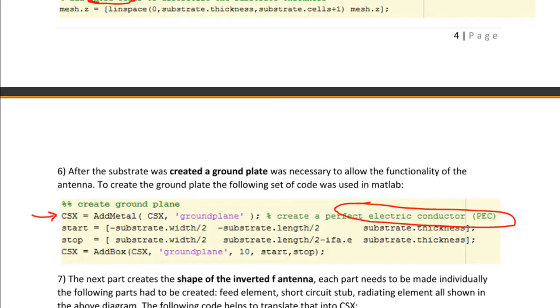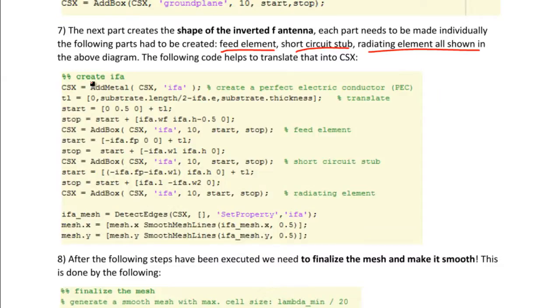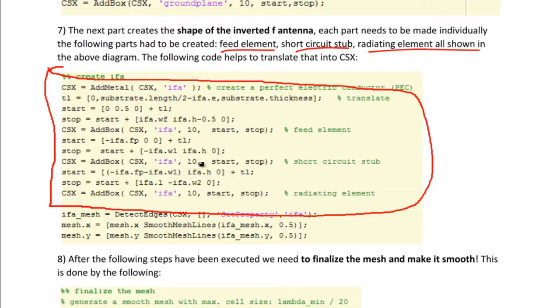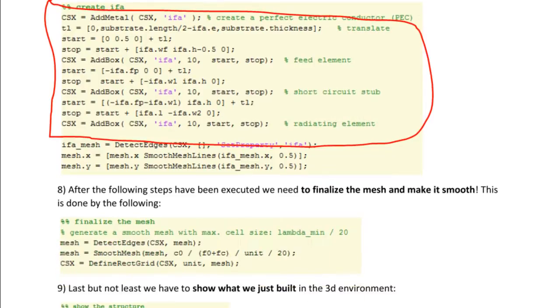There are also some really important points. The most important part then comes down to the shape of the inverted F antenna. This really shows how things like the feed element, the short circuit stub, how the whole antenna would radiate. This is just showing this code below. There's a big piece of code right here that shows all of how we created the inverted F antenna in the CAD software.